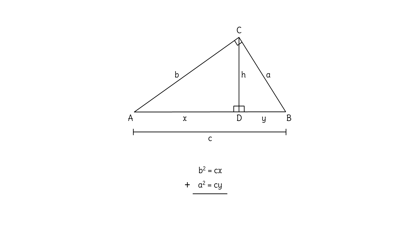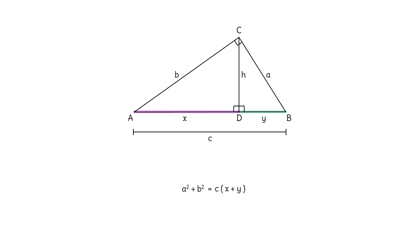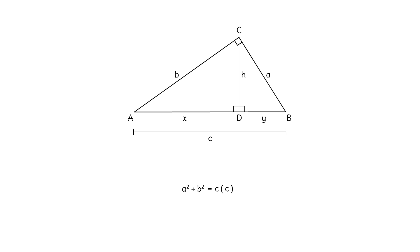We'll use these two equations to prove the Pythagorean theorem. Adding them gives A squared plus B squared equals CX plus CY. Factoring out C, we get C times the quantity X plus Y. In our diagram, X plus Y equals C by the segment addition postulate, so substituting gives A squared plus B squared equals C times C, which is C squared. So, with the help of an altitude and similar right triangles, we proved that A squared plus B squared equals C squared in any right triangle.